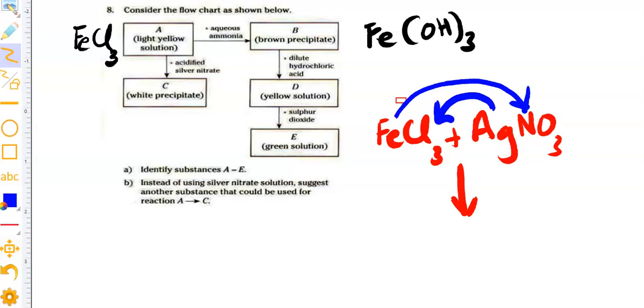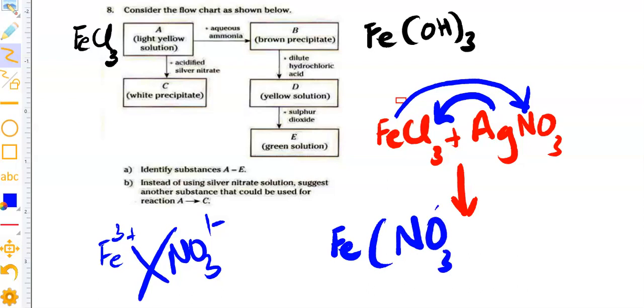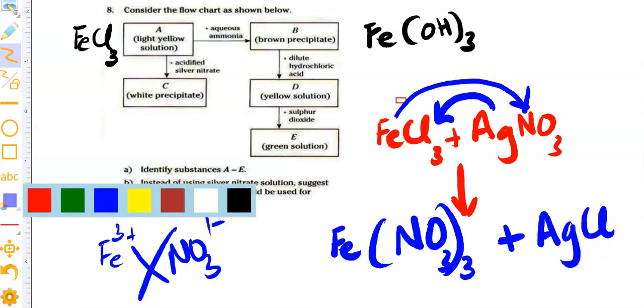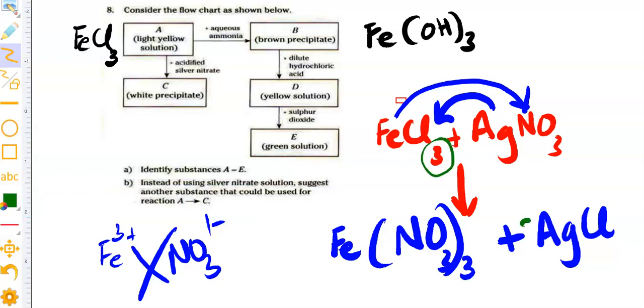And you get Fe. Fe carries 3+ and NO₃ carries 1-. And when you exchange them, you get Fe(NO₃)₃. And coming to AgCl. Now is the time to balance the chemical equation. You have 3 here so you need to put 3 here. Your chloride ion is balanced. You have 3 nitrate here, you need to put 3 here. And your equation is balanced. This is aqueous and this is solid. So this is your C part.